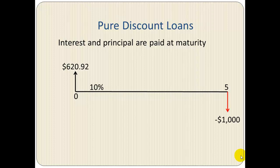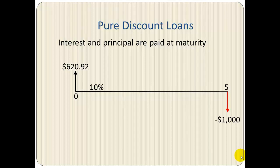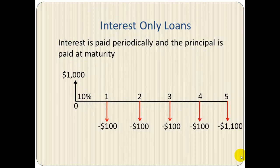With a pure discount loan, let's say a borrower needs to borrow one thousand dollars for five years at ten percent. The borrower gets upfront the present value of one thousand dollars, which is six hundred and twenty dollars and ninety-two cents. The difference between one thousand and six twenty point ninety-two represents the interest paid for five years, and the interest and principal are all paid together upon maturity.